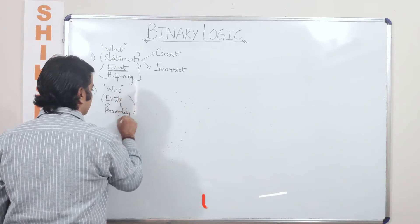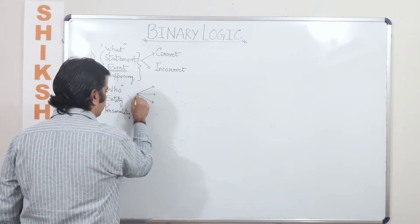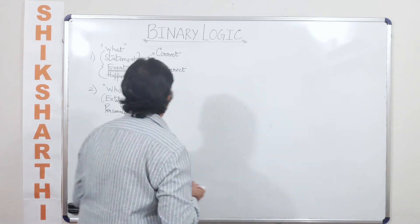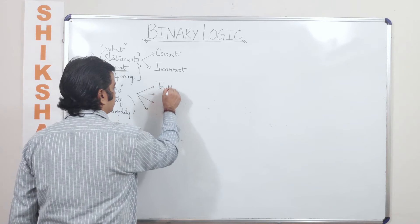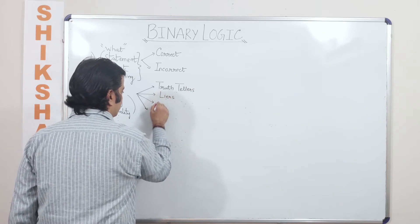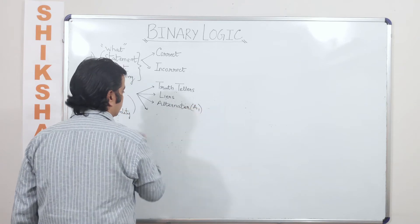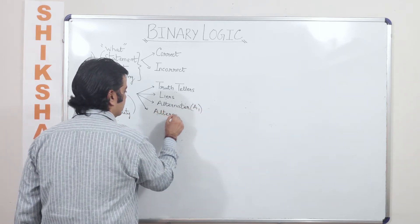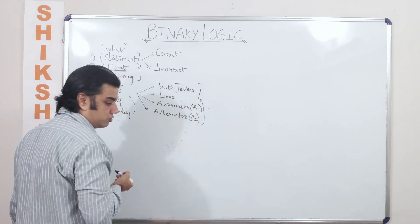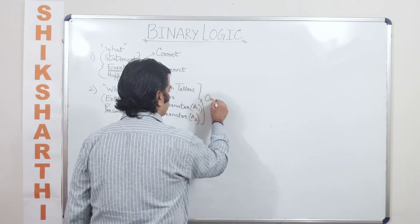This 'who' can be divided into four parts. Broadly, you will come across four different types of personalities in life. One would be truth tellers, the other would be liars by definition, third would be alternators — alternator of one variety (A1) — and the last would be alternators of another variety. As of now, we are talking about a systematic, ordered approach — ordered sets with a particular order.